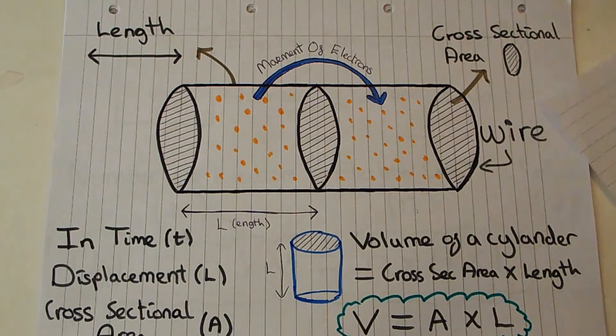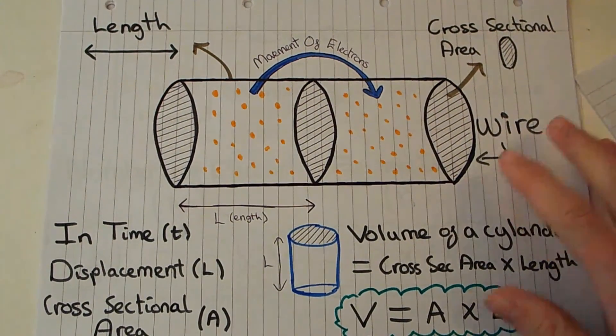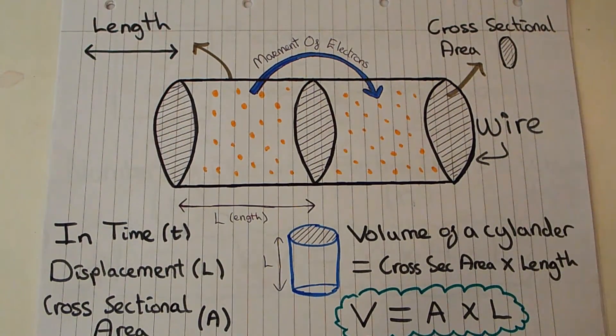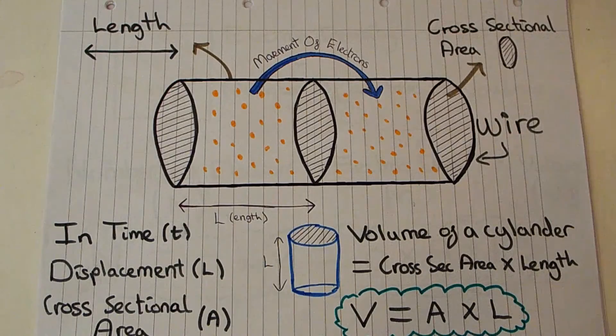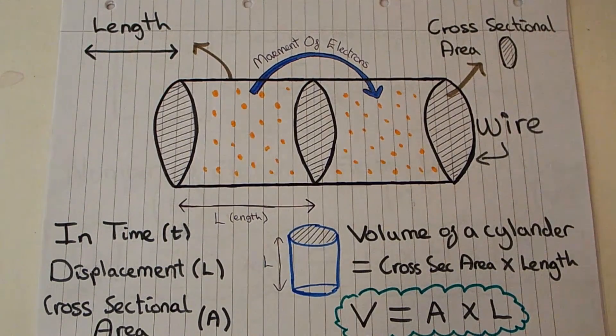So we start off with a wire and we've also got electrons moving around in it. If there's a current going through that wire then these charged particles, electrons, are moving through it and what we say is that in a time t a displacement of L occurs over a cross-sectional area of A.